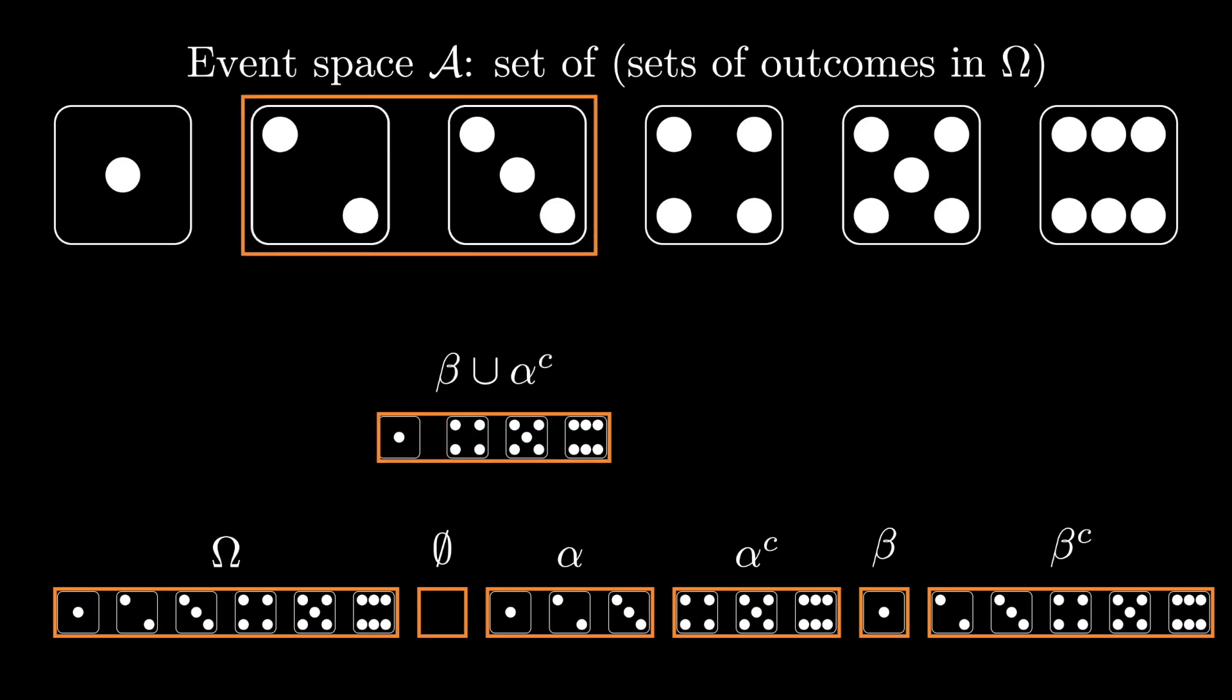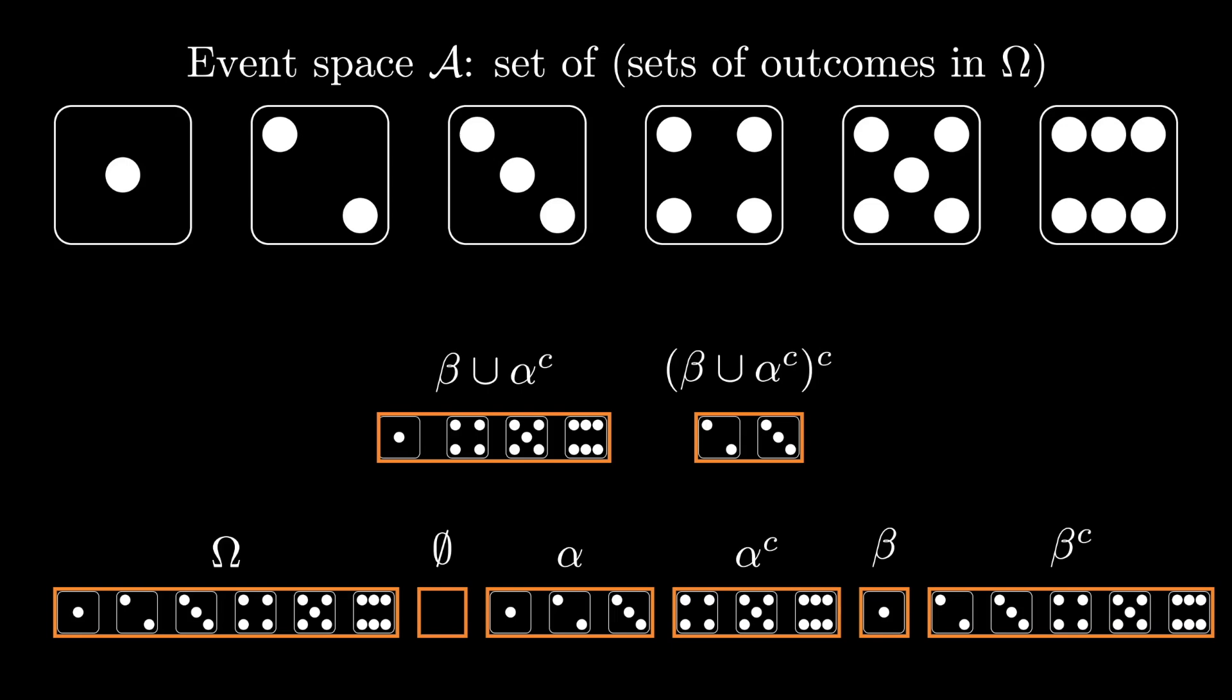We might say that this is the sigma algebra or event space that is generated by alpha and beta. That is, it's the smallest such event space that contains alpha and beta.